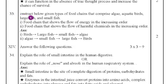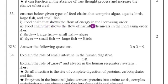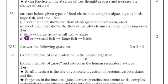Number 33: construct food chains using algae, aquatic birds, large fish, and small fish. First: a food chain showing the flow of energy in increasing order — algae → small fish → large fish → birds. Second: a food chain showing the flow of harmful chemicals in increasing order — algae → small fish → large fish → birds.